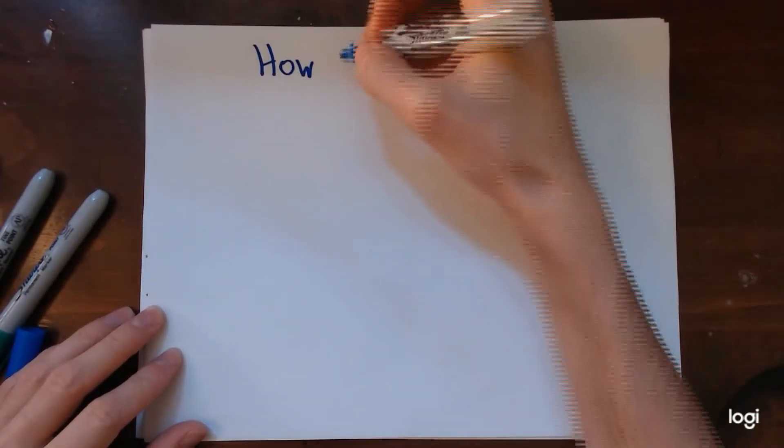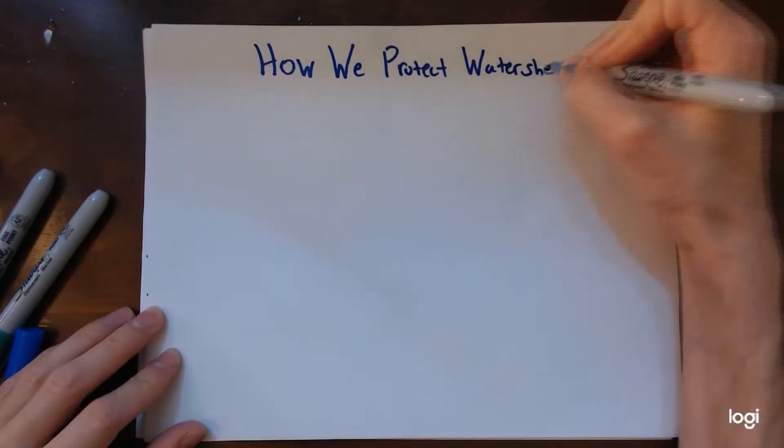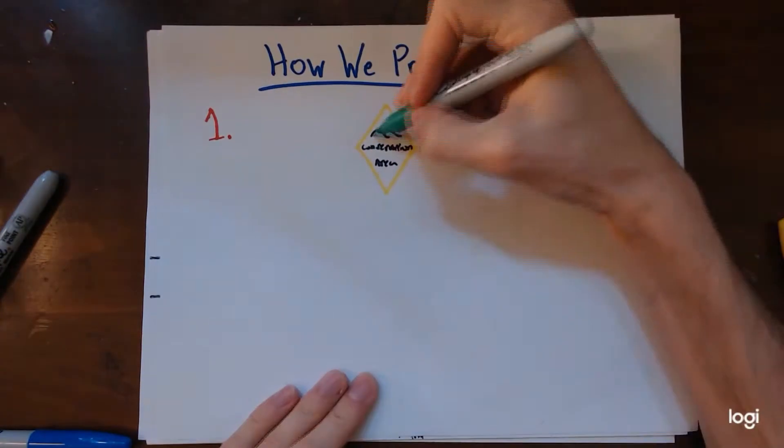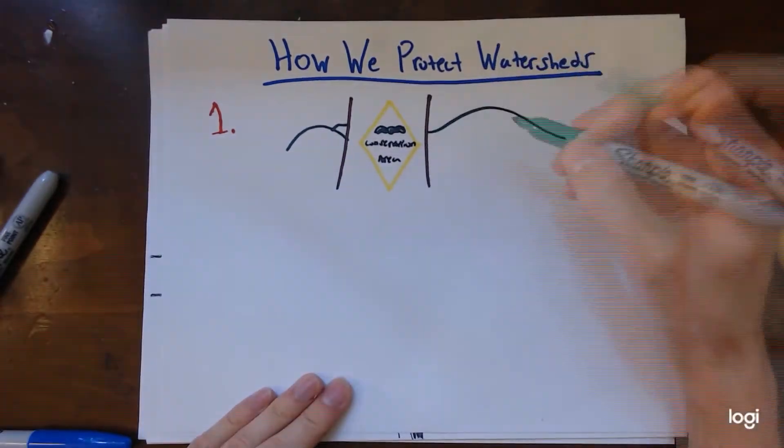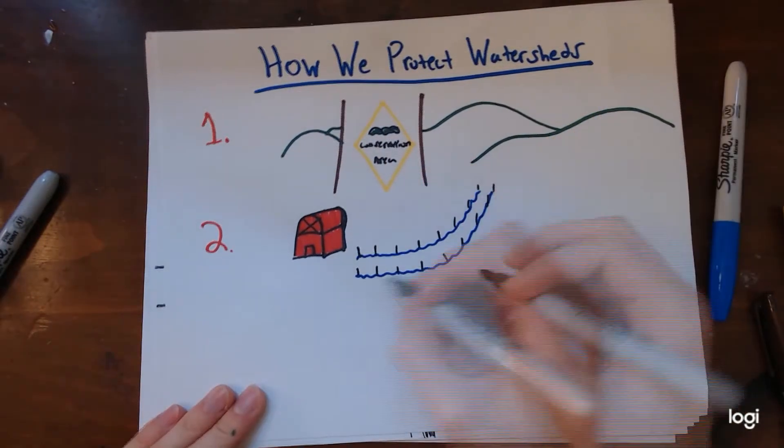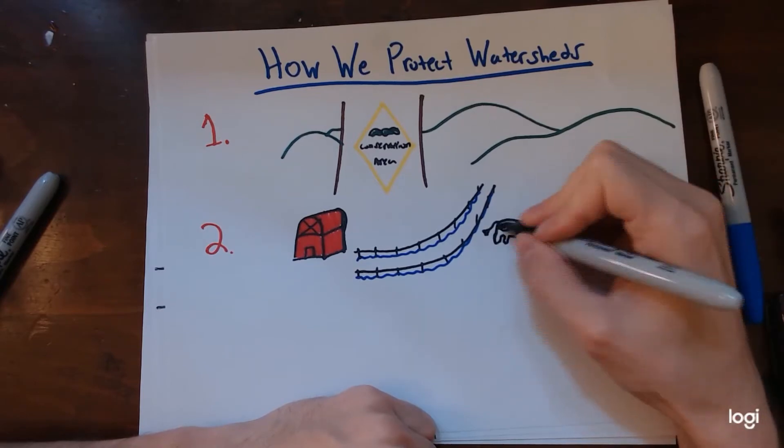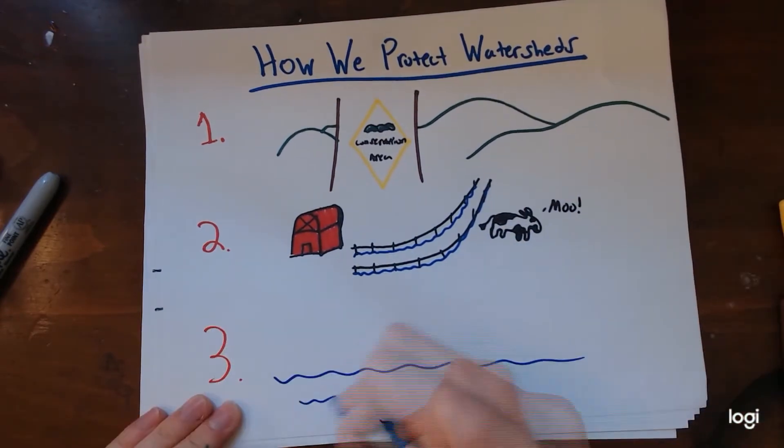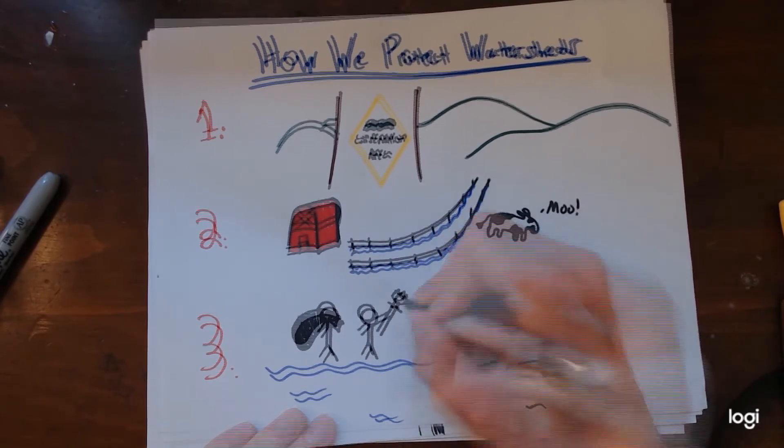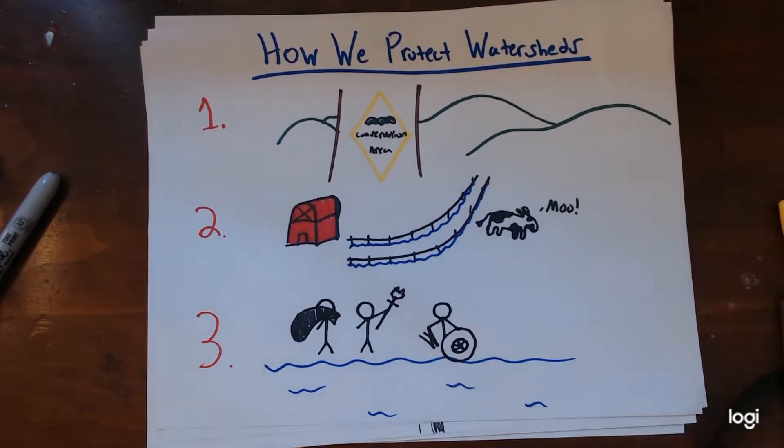SAHC takes steps to help protect headwater streams through many different ways. By protecting properties under protection, we can guarantee that the streams won't be polluted or developed on. Through fine land conservation, we can educate farmers on how to take care of their cows and keep them out of the streams. Actively cleaning up streams and removing debris helps improve water quality from the headwater all the way down to the estuary.